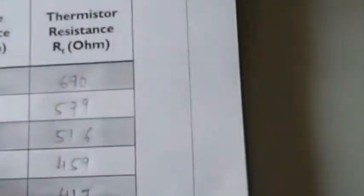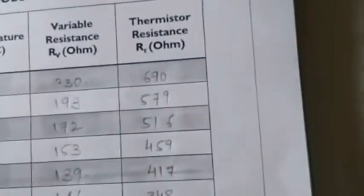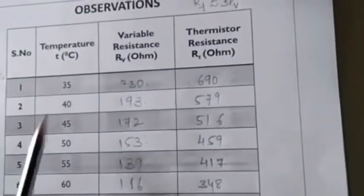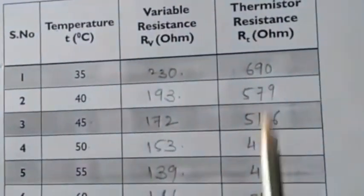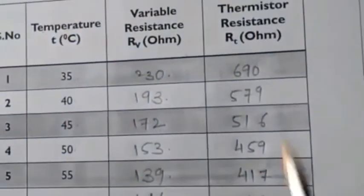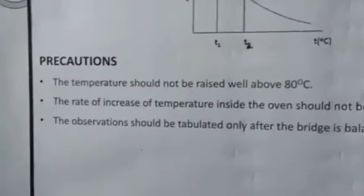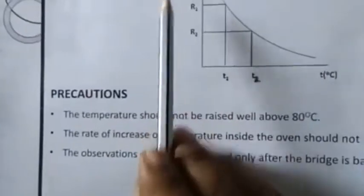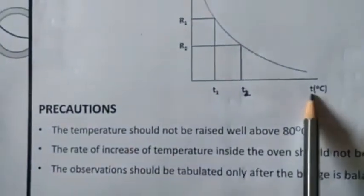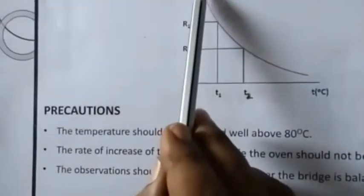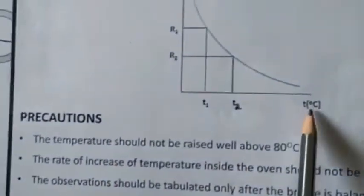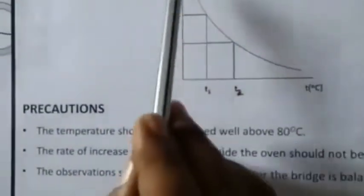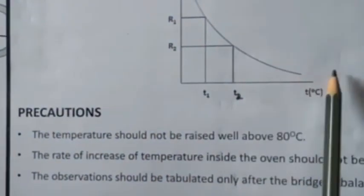The thermistor resistance at temperatures ranging from 75 to 35 degrees centigrade can be determined in the range of 225 to 690, simply by multiplying by 3. From the model graph plotted between resistance of the thermistor versus temperature, you can see an exponential curve, because the thermistor is a semiconductor — upon increasing the temperature, resistance decreases in an exponential manner.